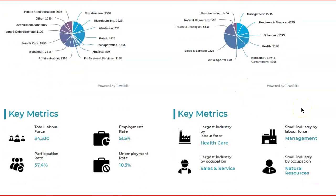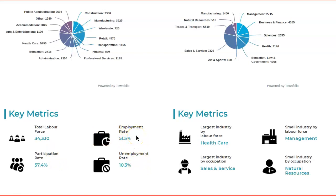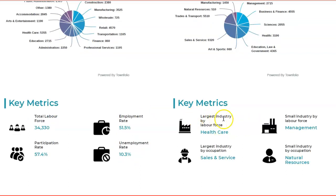Looking at the key metrics, the total labor force is around 34,330 people with a participation rate of 57.4 percent. The unemployment rate is a little higher at 10.3 percent, with an employment rate of 51.5 percent. We need to check how many retirees are affecting those numbers. The largest industry by far is healthcare, and the largest occupation is in sales and services.